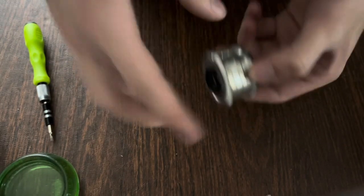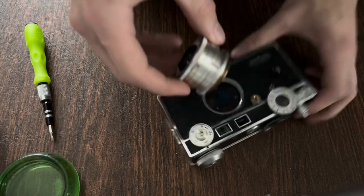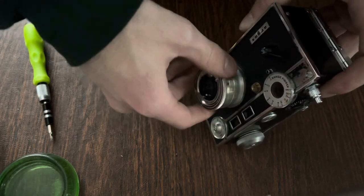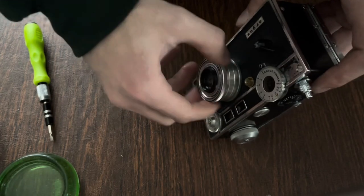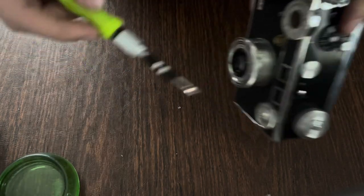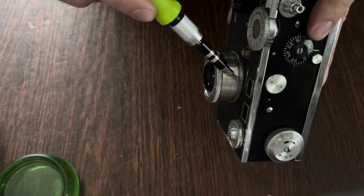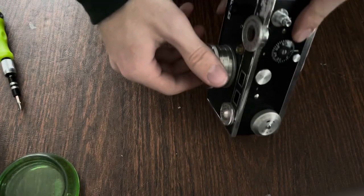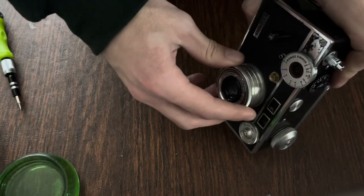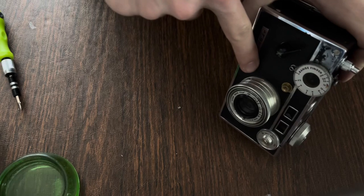You'll have it already screwed on after testing it. You'll see that the edge of the teeth ends right there, and that's where it should go, right underneath the rangefinder window. Now rotate it so that the teeth are almost in line with the cocking lever.